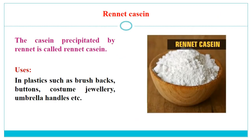Now we will discuss about rennet casein. The casein precipitated by rennet is called rennet casein. Rennet is a crude enzyme prepared from the immature calf stomach and is commonly used for preparation of cheese as a coagulating agent. The uses of rennet casein include plastics such as handbags, buttons, costume jewelry, umbrella handles, etc.